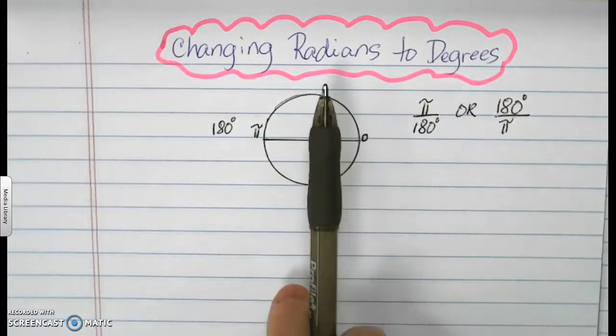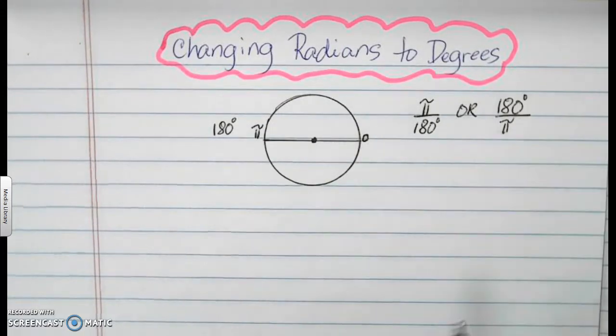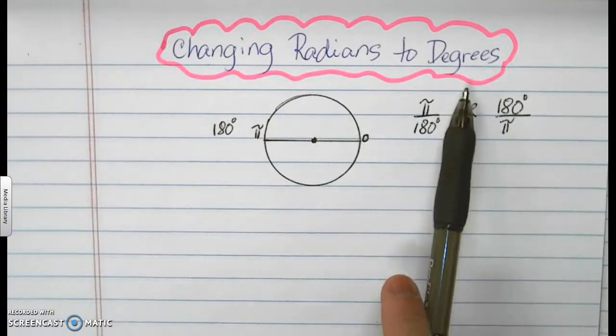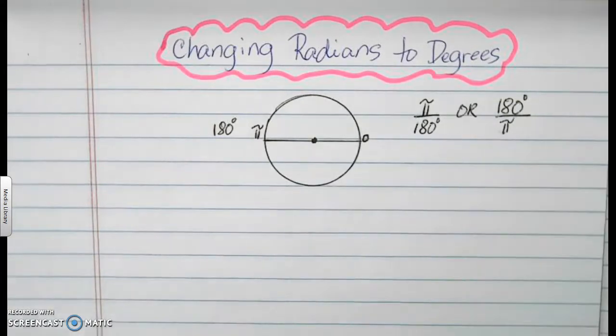But this time, I'm using both because when we are changing radians to degrees, it's possible that we're also changing degrees to radians. So it's either way, depending on what you need.